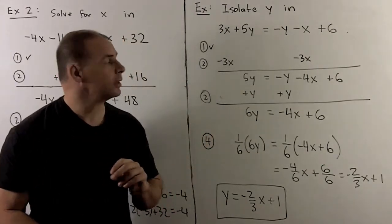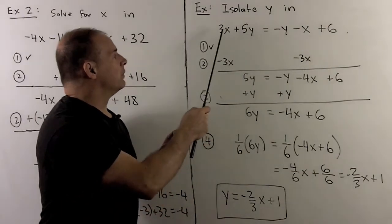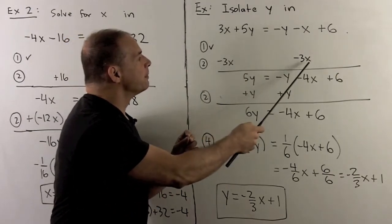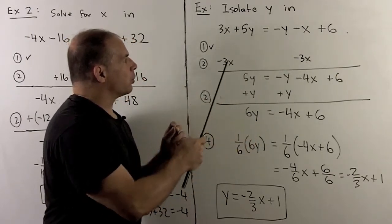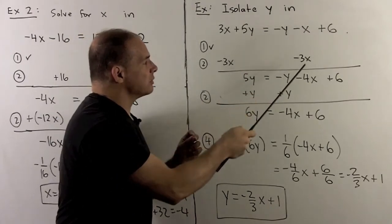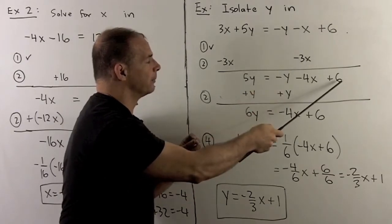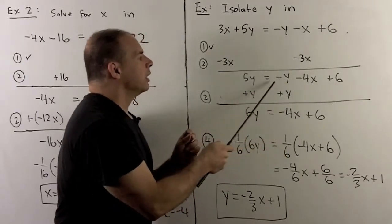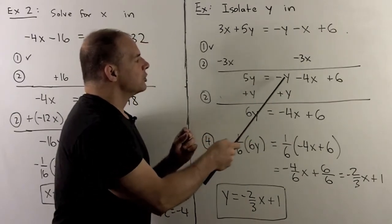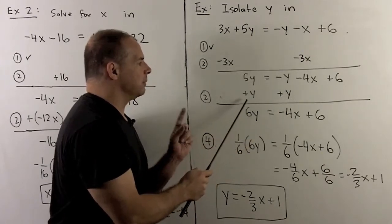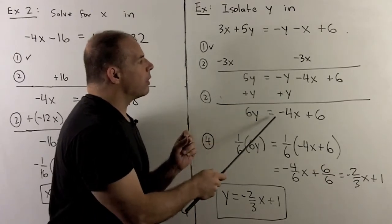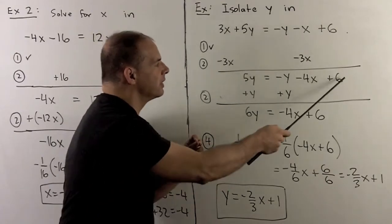We'll do it the long way. To move the 3x, I add minus 3x to both sides. This goes away, leaving 5y. Minus y comes down. Minus x minus 3x gives minus 4x, and 6 comes down. Next, I want to push the minus y to the other side as plus y, so I add plus y to both sides to keep the equality. I get 6y on the left. Minus y and y go to 0. Minus 4x and 6 remain on the right.